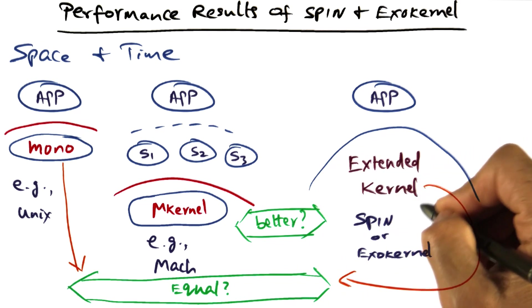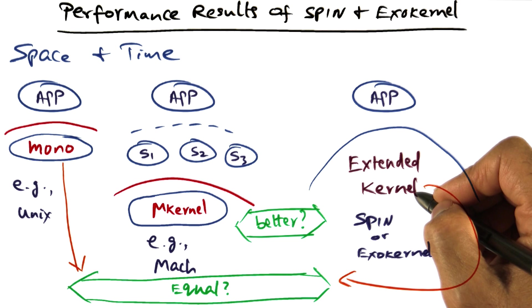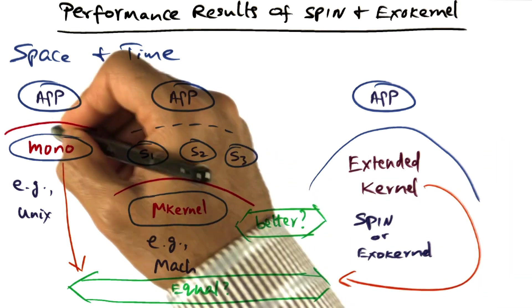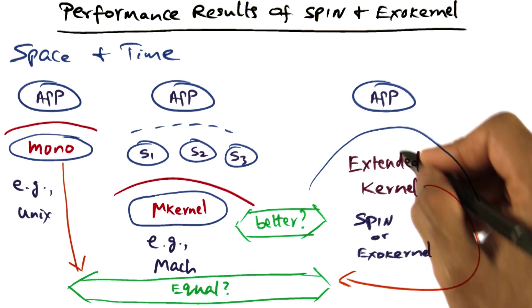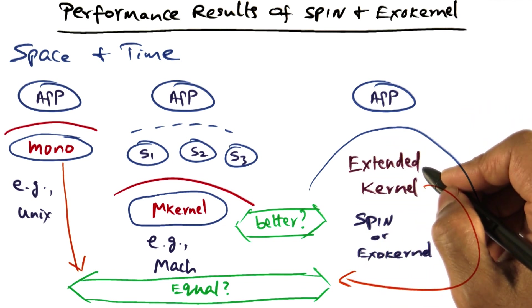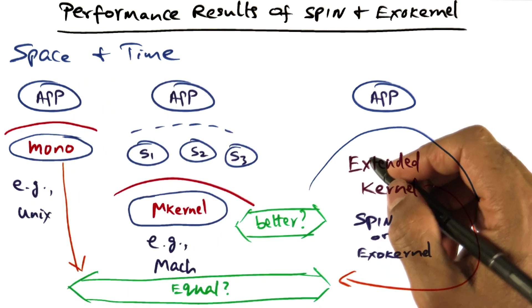And since we know an extended kernel may have to incur loss of locality and border crossing overhead and so on compared to a monolithic kernel, another question that we may want to ask is, is the extended kernel at least as good as a monolithic kernel?